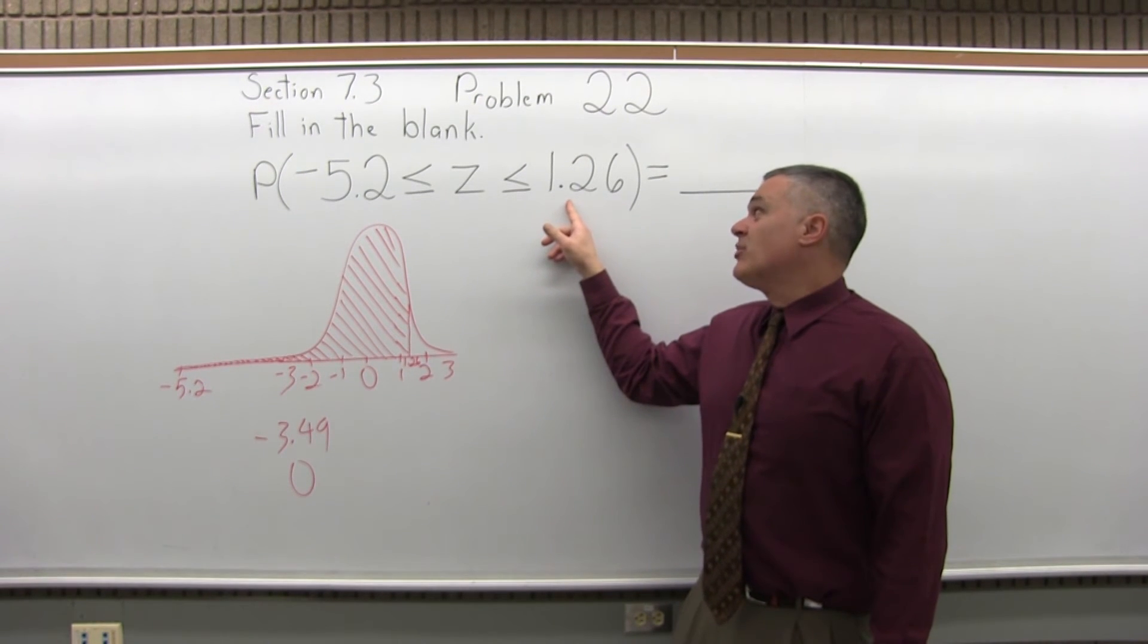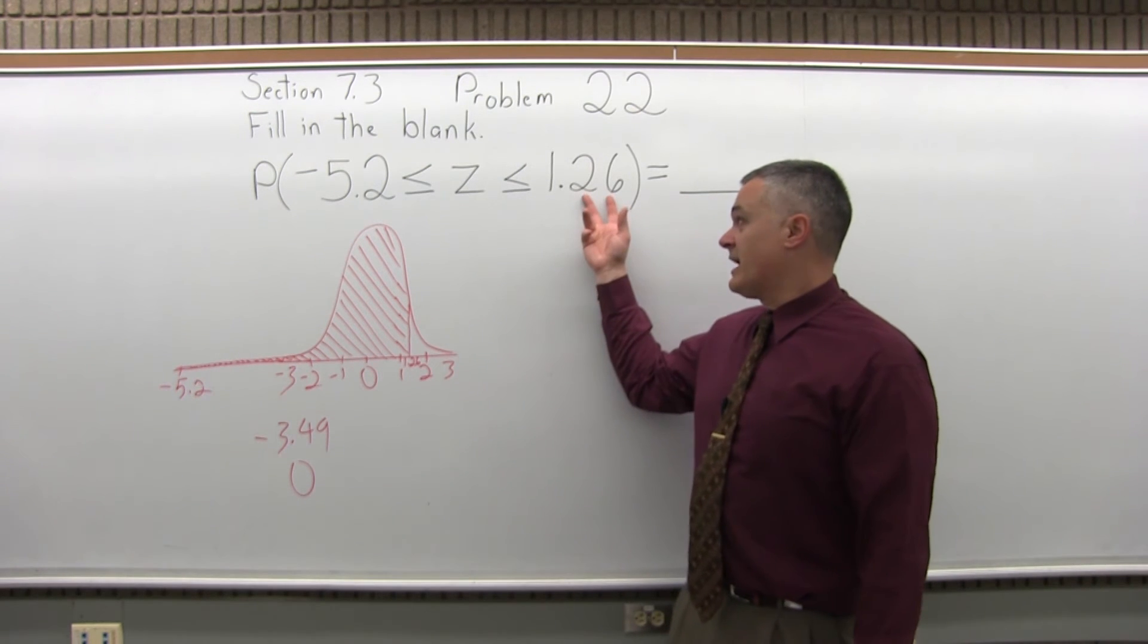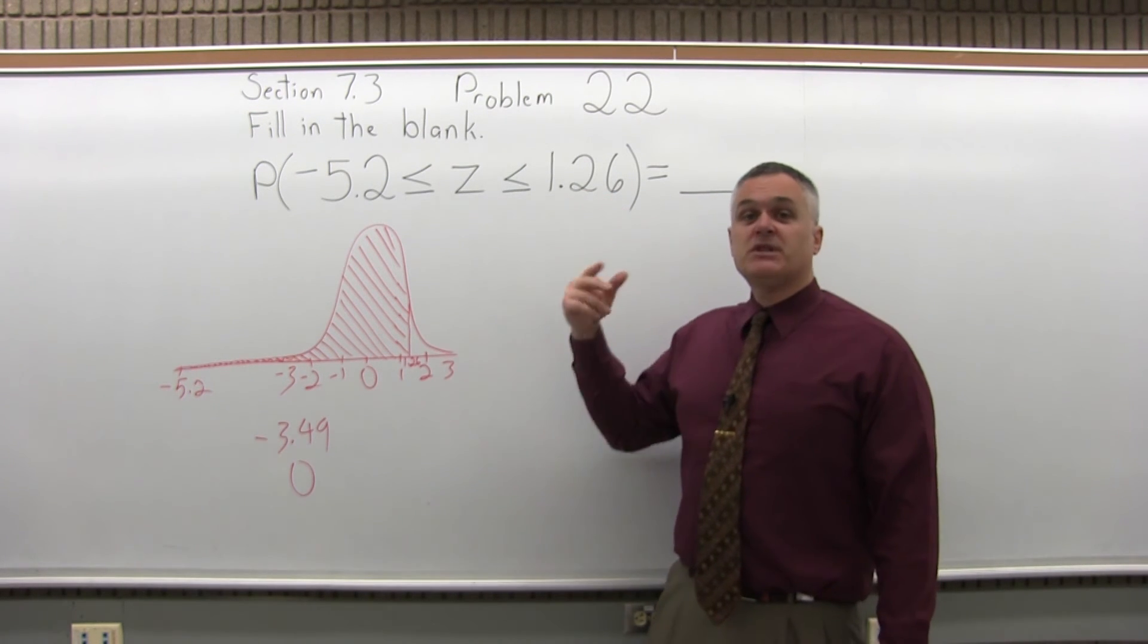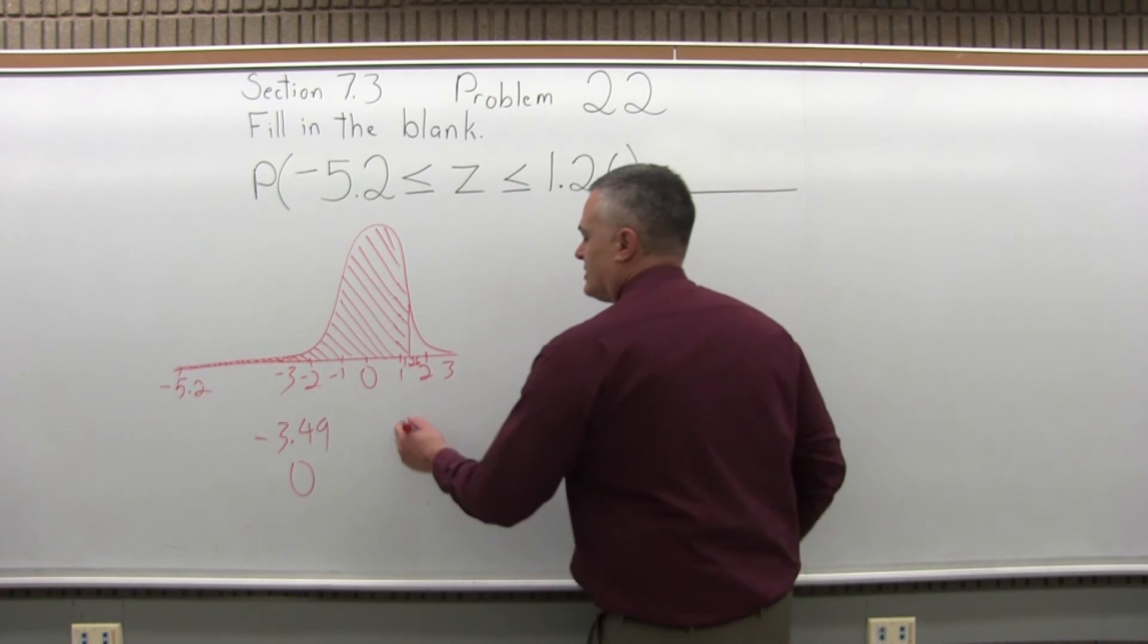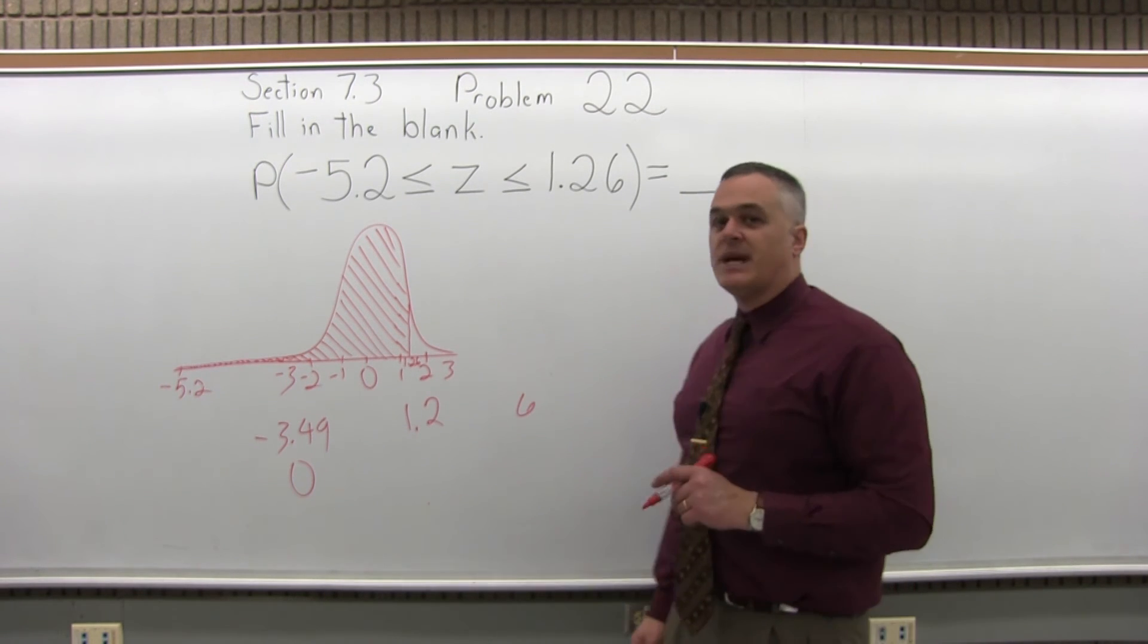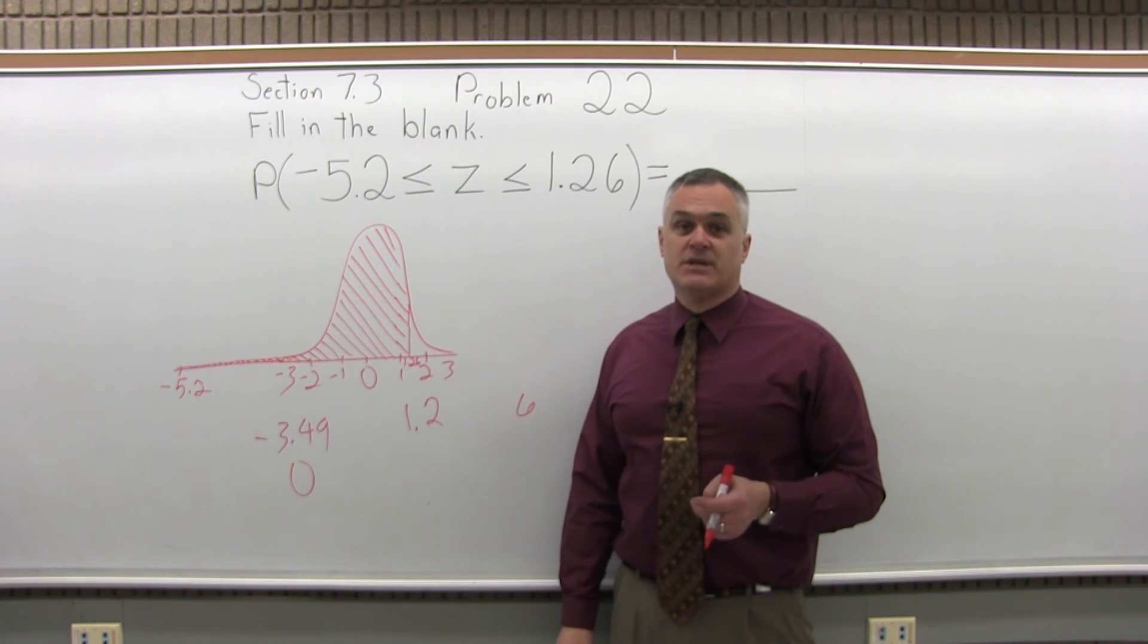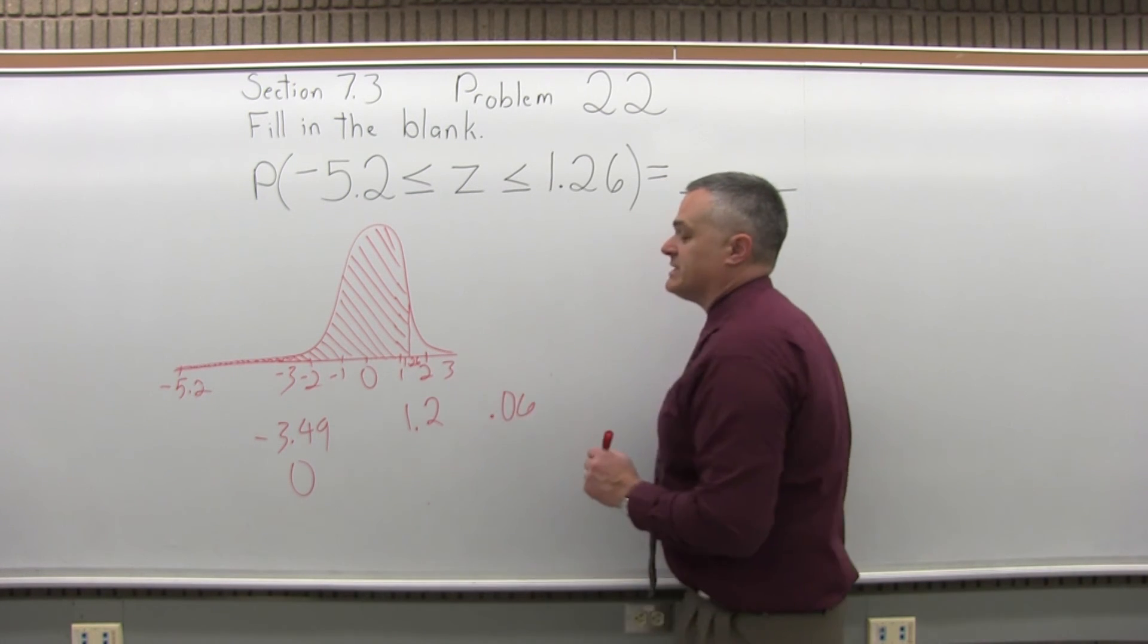To look it up, step one, write the number to look up so that it has two places after the decimal, which I have. Step two, split the number into two parts by pulling off the rightmost digit, which is the 6, so I'll write it as 1.2, and then I'll move over a little bit and put a 6. Step three is put a 0 in front of the rightmost digit that you pulled off. So that 6 gets written as 0.06.